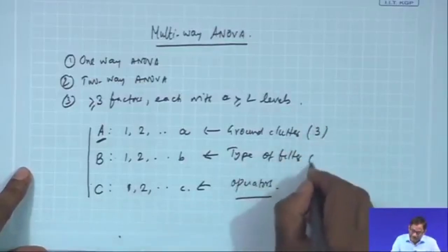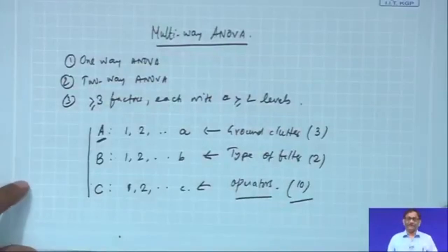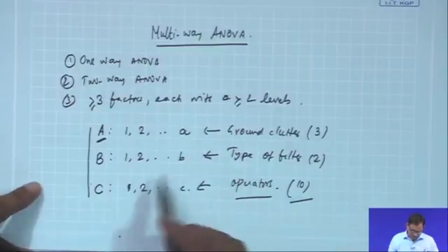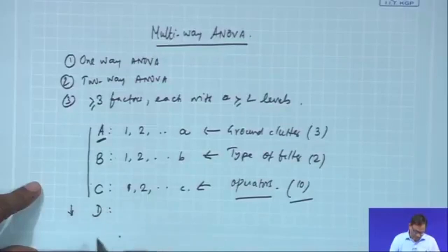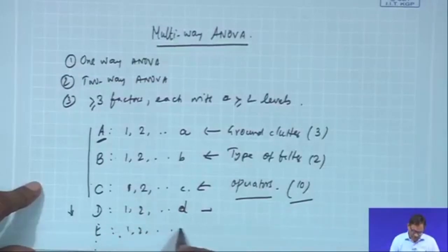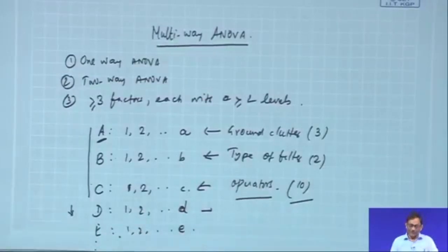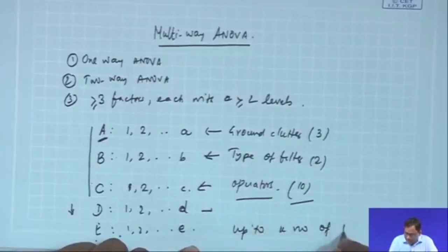The three different factors each with different levels: ground clutter has three levels, filter has two levels, and operators — suppose you have ten different operators who can be considered — this gives three levels. You may find that there are more number of factors, D, E, and many more. D will be one to each with D levels, E will be one to each with E levels. Similarly, you can go up to K number of factors.